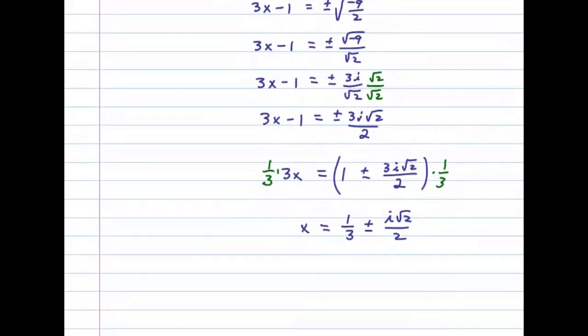We have two complex solutions, and we want to present our answer in standard form a + bi. So we write x = 1/3 ± (√2/2)i.